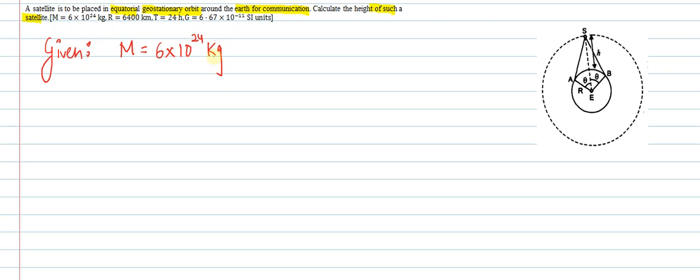6 into 10^24 kg, radius of earth we have to take 6400 km, time period 24 hours, and G value 6.67 into 10 to the power minus 11 SI units.